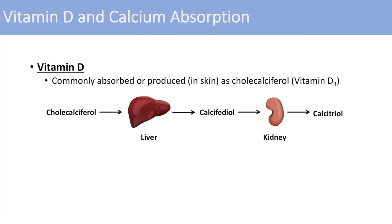This brings up an important point: in order for a person to produce calcitriol in adequate amounts, they actually need a healthy and functioning liver and a healthy and functioning kidney.